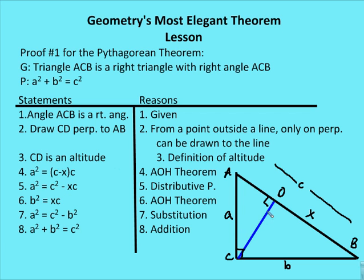Now I can say that A squared is equal to C minus X times C — where AB is C and X is DB — and that's from the altitude on hypotenuse theorem. Using the distributive property, A squared equals C squared minus XC. Then B squared, or BC squared, equals C times X, which is DB times AB, also from the altitude on hypotenuse theorem. By substitution, since XC equals B squared, we substitute B squared in for XC and get A squared equals C squared minus B squared.